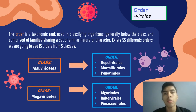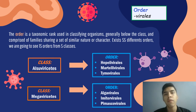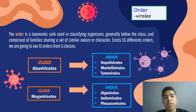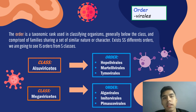The order is a taxonomic rank used in classifying organisms, generally below the class and comprising families sharing a set of similar characters. There are 55 different orders of viruses. From the class Alasovirikores, we have three orders: Epelivirales, Simovirales, and Marcellivirales. From the class Megavirikores, we have Algavirales, Immertivirales, and Primaskovirales.